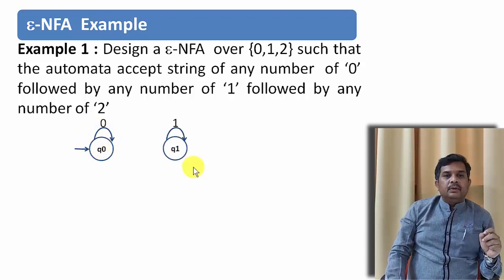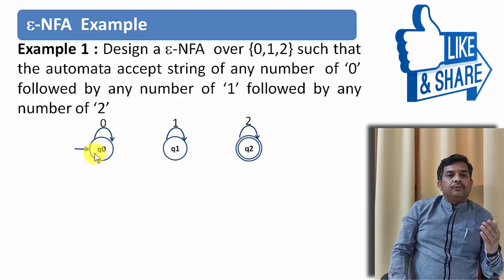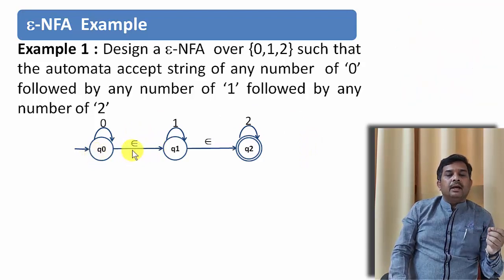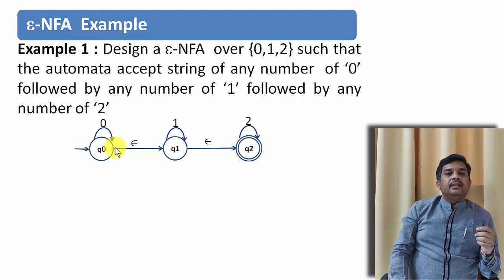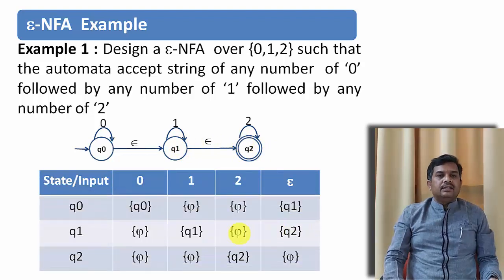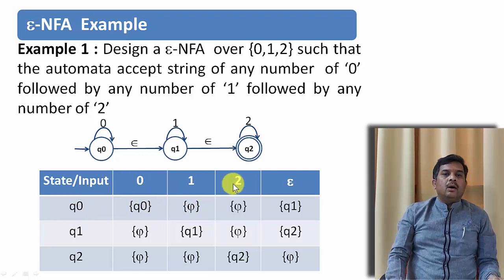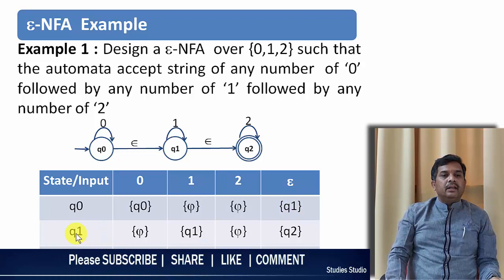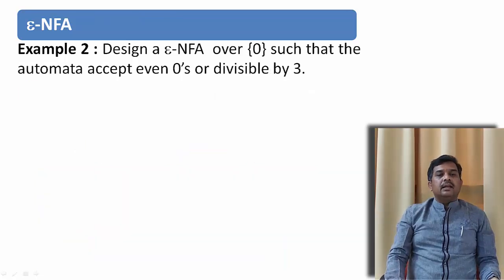So 0 star we can represent this with Q0 as the starting state and 0 star can be represented with this loop on 0. Similarly, if Q1 is a state then 1 star can be represented in the form of this loop. Similarly, 2 star can be represented in the form. So from Q0 to Q1 I can have an epsilon transition and from Q1 to Q2 I can have an epsilon transition. So this is an epsilon-NFA that accepts number of 0s followed by number of 1s followed by number of 2s. Let us see this transition table. If you are at state Q0 and give input symbol Q0 it will be at Q0. On 1 or 2 it will be phi and on epsilon it is going to Q1. Similarly for state Q1 and for state Q2 where Q2 is the final state.